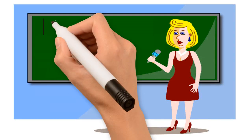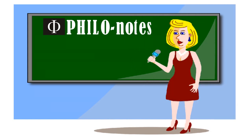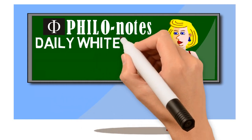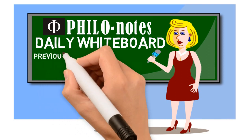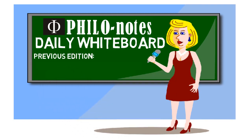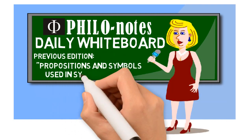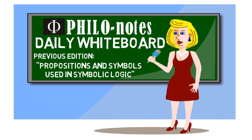Hello, everyone. Welcome once again to Philo Notes. Thank you for visiting us today for another edition of our daily whiteboard. In the previous edition of the Symbolic Logic series, titled Propositions and Symbols Used in Symbolic Logic, I discussed the two basic types of proposition as well as the symbols used in symbolic logic, including how propositions can be symbolized using a variable or a constant. If you missed that edition, I suggest you check it out, as it's very important to know the symbols before moving on to more complex topics in symbolic logic.